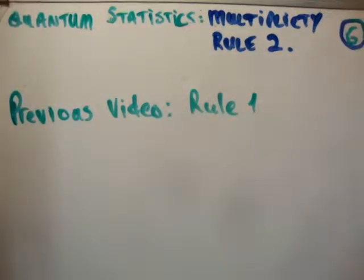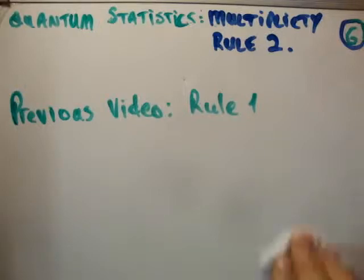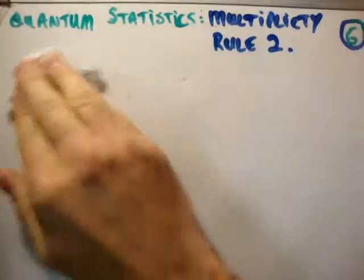So I'm going to build up these rules. I think I have 6. Let me check it out. 5. I've broken it down into actually 5 rules. I'm going to do 5 rules, and then I'm going to use all of these 5 rules to get the multiplicity functions for the distributions for Bose-Einstein, Maxwell-Boltzmann, Fermi-Dirac, or classical, fermion, and boson.